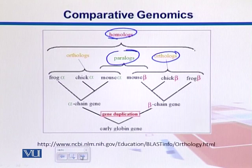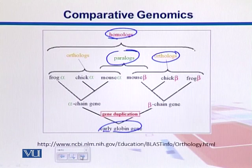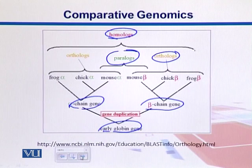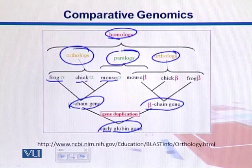For orthologues, if we start from the bottom of the diagram, we start with some globin gene, and then there is a gene duplication — it has become a beta chain gene and an alpha gene. Those alpha genes are present in three different organisms, and because they are similar, they are called orthologues.